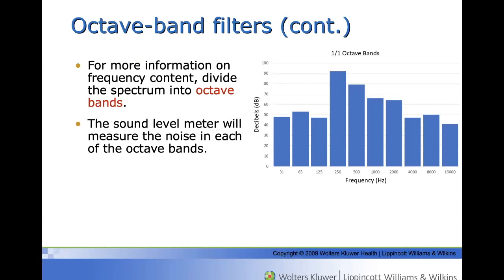The sound level meter will measure the noise in each of the octave bands, either all at the same time, real time or parallel filters, or switching to one band at a time, serial filters. This figure shows an example of a typical octave band spectrum where the level at 250 Hz is greatest.